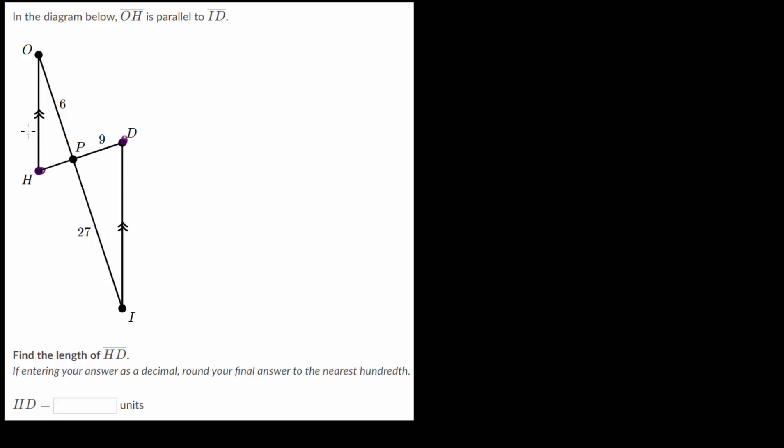And we can use the properties of parallel lines. And we can also notice that we have two vertical angles here. The angle OPH and the angle DPI, these are vertical, which means that they're equal to each other. So this one and this one, these two angles, these are equal.